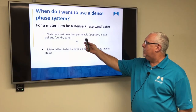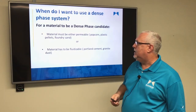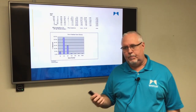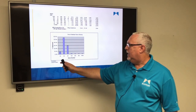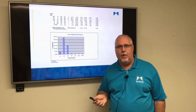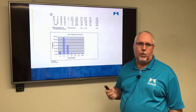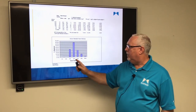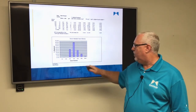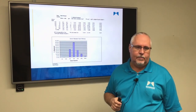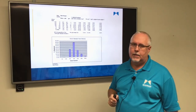To reiterate: the material must be either permeable — like popcorn, plastic pellets, foundry sand — or fluidizable — like Portland cement, granite dust. It has to be one or the other to work in a dense phase system. One way to determine if you have a good material for dense phase is a sieve analysis. A material that is 100% between 16 and 50 mesh with very large particles and not a lot of distribution is permeable and would work well in dense phase. Another product ranging between 50 and 450 mesh, with nearly 10% at 450 mesh and 25% at 50 mesh, means you have lots of little holes where particles can get trapped. When you have big particles mixed with little particles, dense phase is not an option.